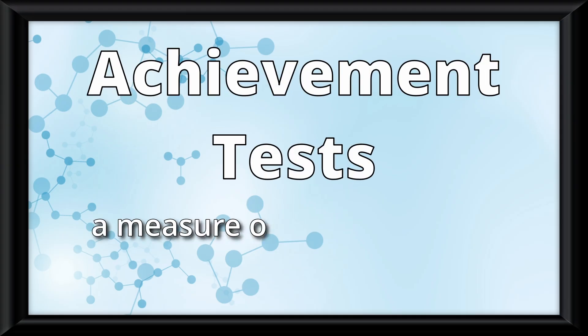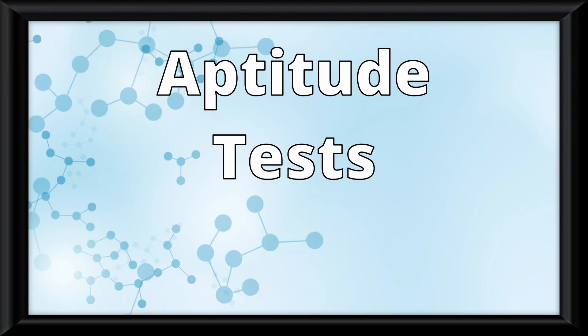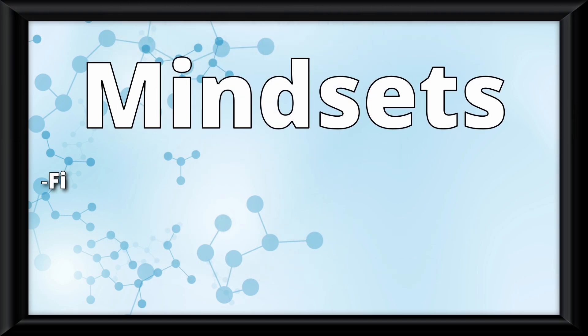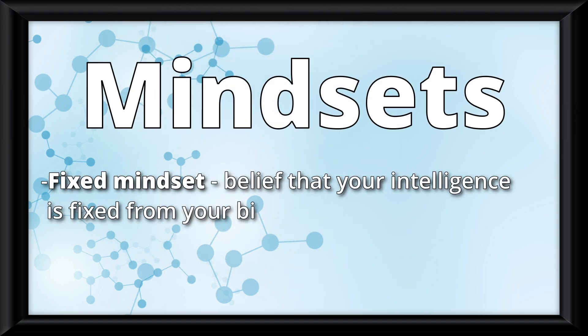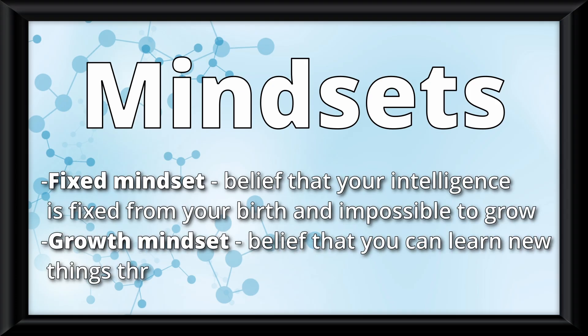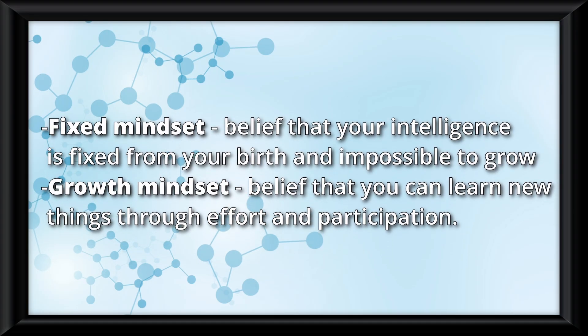A few more things to go over. Achievement tests are a measure of what someone knows, while aptitude tests predict how well someone will do in the future. Now the mindsets. A fixed mindset is the belief that your intelligence is fixed from your birth and impossible to grow. While a growth mindset is the belief that you can learn new things through effort and participation. I'm sure you can guess which mindset makes a better human being.